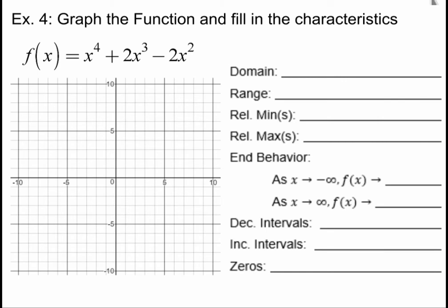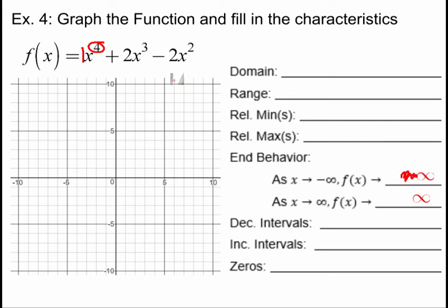Let's look at another example: f of x equals x to the fourth plus 2x cubed minus 2x squared. This function has an even degree, so both end behaviors should be the same. The leading coefficient is positive 1, so both ends go to positive infinity. I know this just from looking at the equation before I even draw a graph.